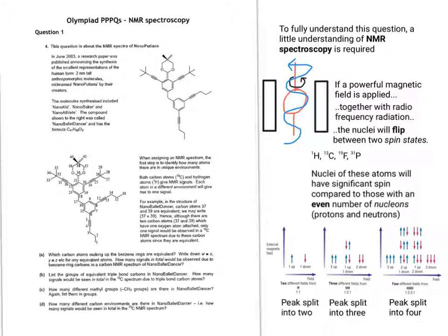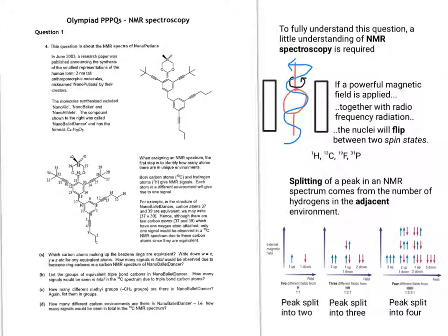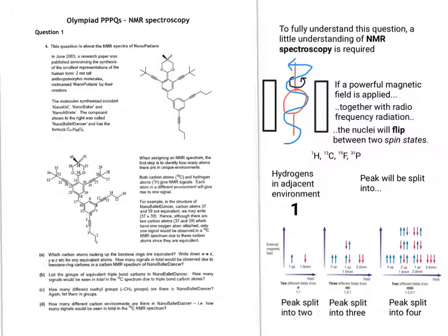This leads to something called the N plus 1 rule. The basis of the N plus 1 rule is the number of hydrogens in the adjacent environment. For example, if we have one hydrogen in the adjacent environment, the peak will be split into two. If we have two hydrogens in the adjacent environment, the peak will be split into three. The number on the left is your N and the number on the right is N plus 1.